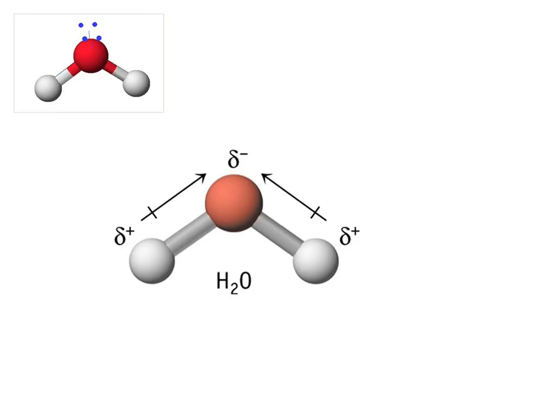We've spent a lot of time in Gen Chem 1 saying that oxygen, since it has four things extending from it — sigma, sigma, lone pair, lone pair — has undergone SP3 hybridization. We would say the geometry is tetrahedral, bond angle 109.5 degrees.